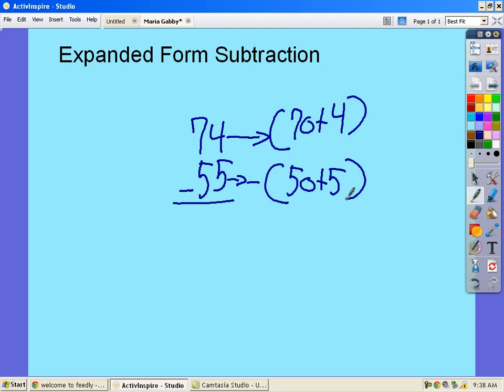Then you put a line. Then you subtract 4 minus 5. But you can't subtract 4 minus 5, so you take a 10 from the tens and cross out the 4 and make it 14. And cross out the 70 and make it 60.